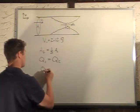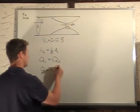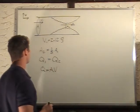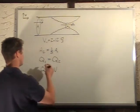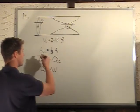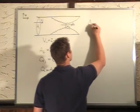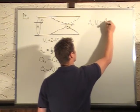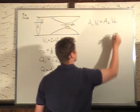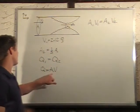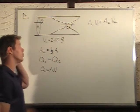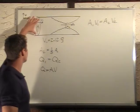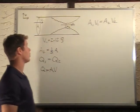So if Q1 equals Q2, and Q equals area times velocity, then A1V1 equals A2V2. So I substitute AV for Q1 and Q2. So area times velocity here equals area times velocity here.